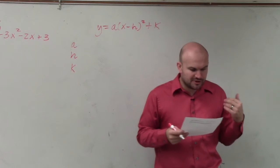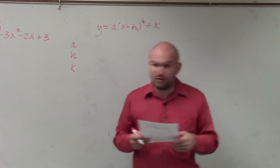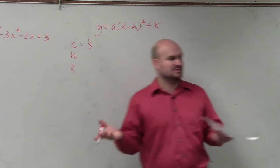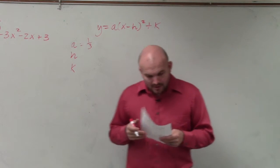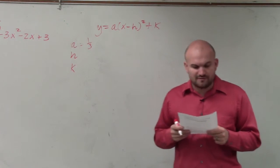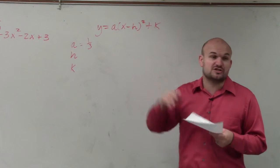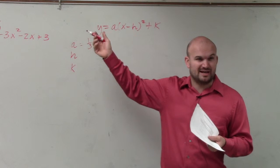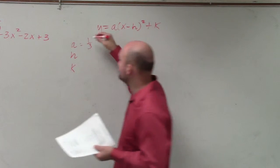So we want to have a vertical stretch by a factor of one-third, so therefore, we know a is going to be one-third, right? Because a affects your vertical stretch. A reflection of the y-axis. Well, if it was a reflection of the x-axis, what would be the value of a? Would a be positive or negative? Negative, right?